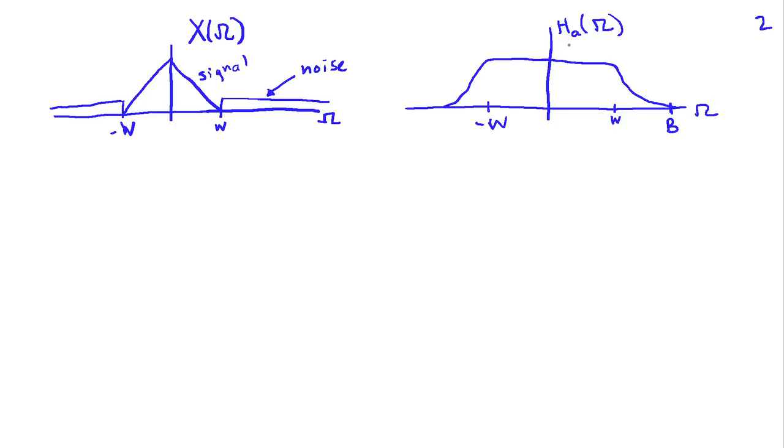So we use an analog filter HA of omega, and I've drawn one here that is somewhat realistic in that it doesn't go exactly to zero at W. Okay, there's a transition band where the filter goes from its pass band to its stop band. And I'm going to assume here that the stop band starts at frequency B. And so in between W and B is sort of this transition region.